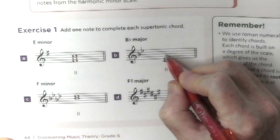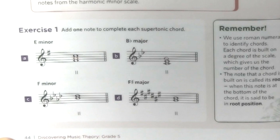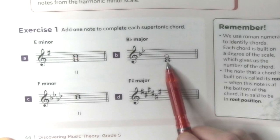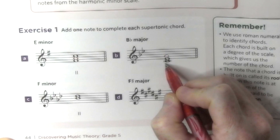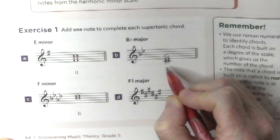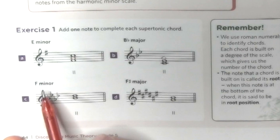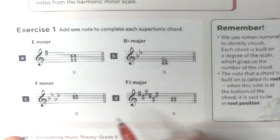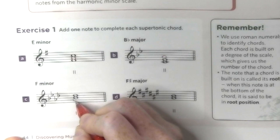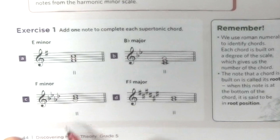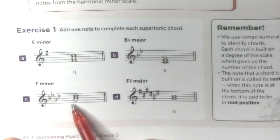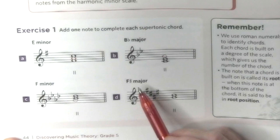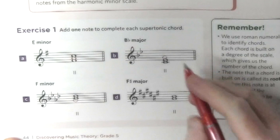The challenge here is to identify the bottom note of the chord. In F minor, the second degree is G, so the first note is missing. It's all about the root position of the chord and identifying the second degree. In F-sharp major, the second degree is G-sharp, which is already present, so we need a note on the top.